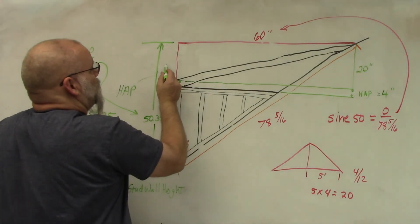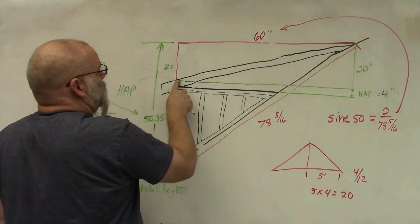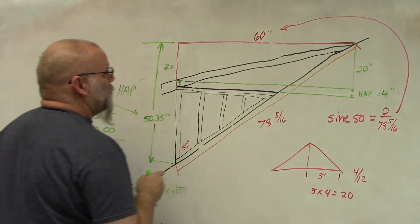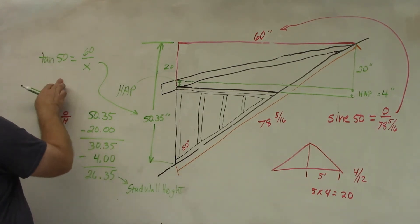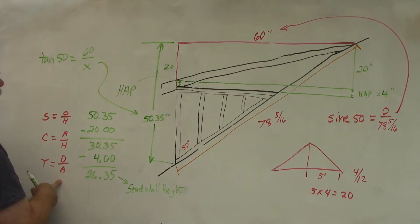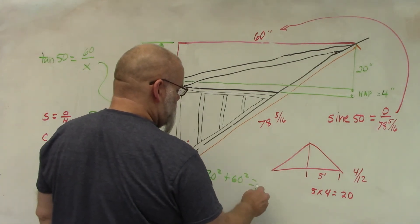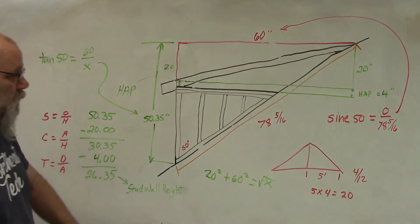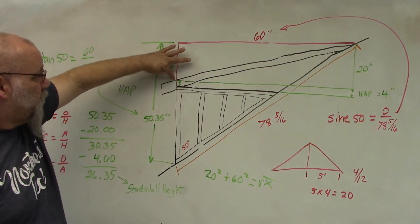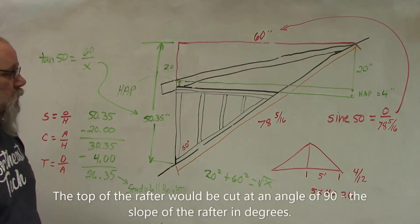So you have this height which is 20 inches, and you got that quite over there, 60 inches. So we can find the run from that point to that point up there. We could use Pythagorean theorem, or we could use this formula over here. So Pythagorean theorem is the easiest one. So 20 squared plus 60 squared equals the square root of that number, and that will give you the rafter length from that point to this point.